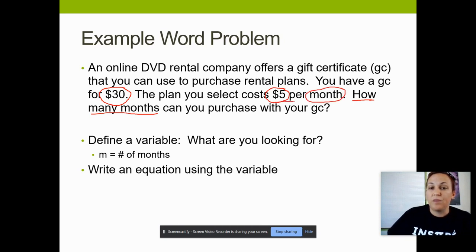Since 5 and month were both in the same sentence, on one side of my equation, I'm going to put the number 5 in my letter M. 30 is the total amount of money that I have, and totals go on the other side of the equal sign. So on one side, I will have a 5 and an M, and on the other side of the equal sign, I will have the number 30.